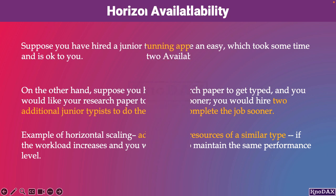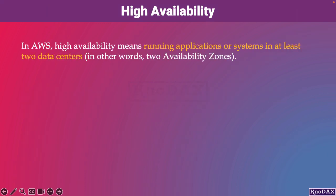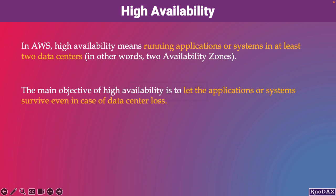High availability usually goes together with horizontal scaling. With respect to AWS, high availability means running applications or systems in at least two data centers, in other words, two availability zones. The main objective of high availability is to let the applications or systems survive even in case of a data center loss.